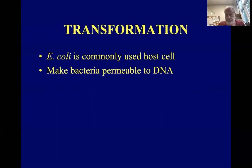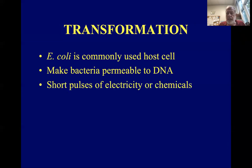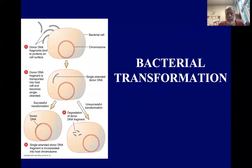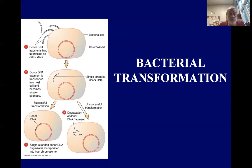For transformation, you need to make the bacterial cell membrane permeable to the DNA. Electroporation — hitting the cells with short pulses of electricity — or chemicals can cause pores to form in the cell membranes. The vector must have a selectable marker, either an antibiotic resistance gene or a gene producing color, so we know which cells have been transformed. This shows the process of bacterial transformation: the donor DNA attaches to the surface and gets into the cell, and it may be incorporated into the bacterial chromosome or sometimes degraded. Transformation isn't always successful.